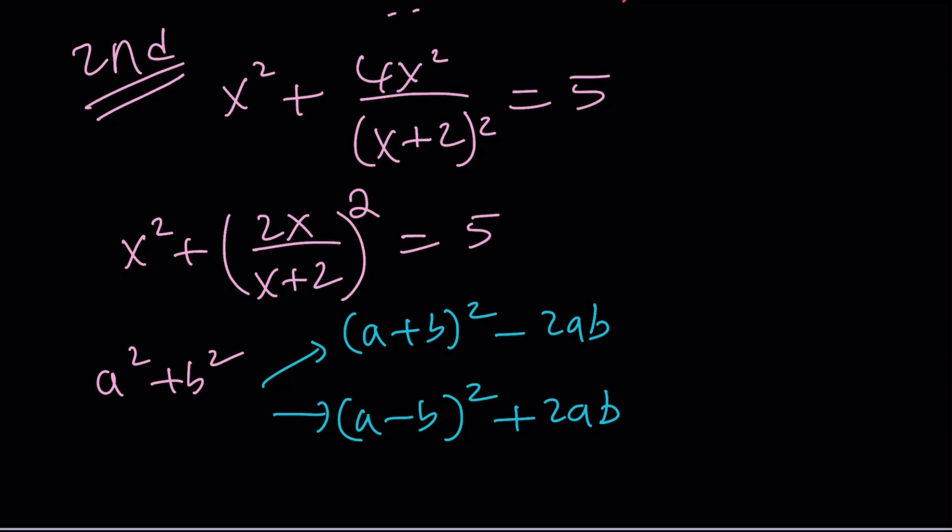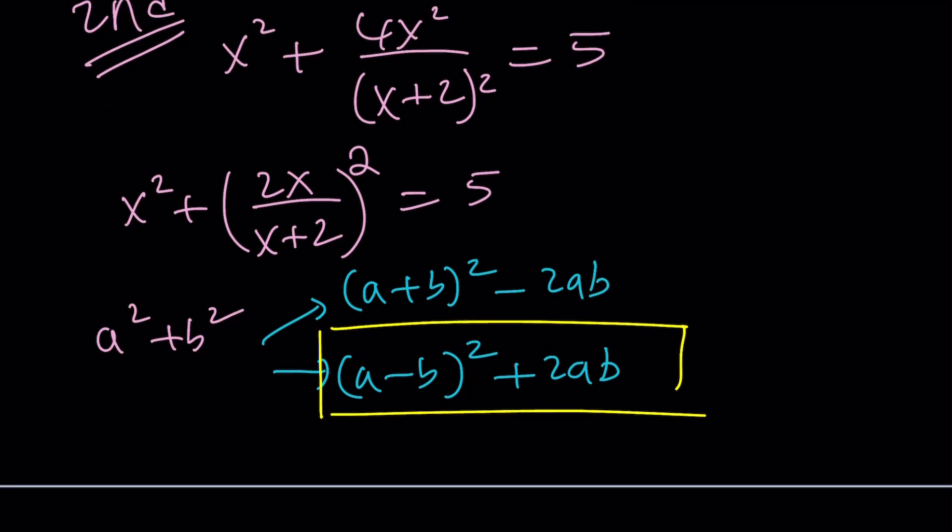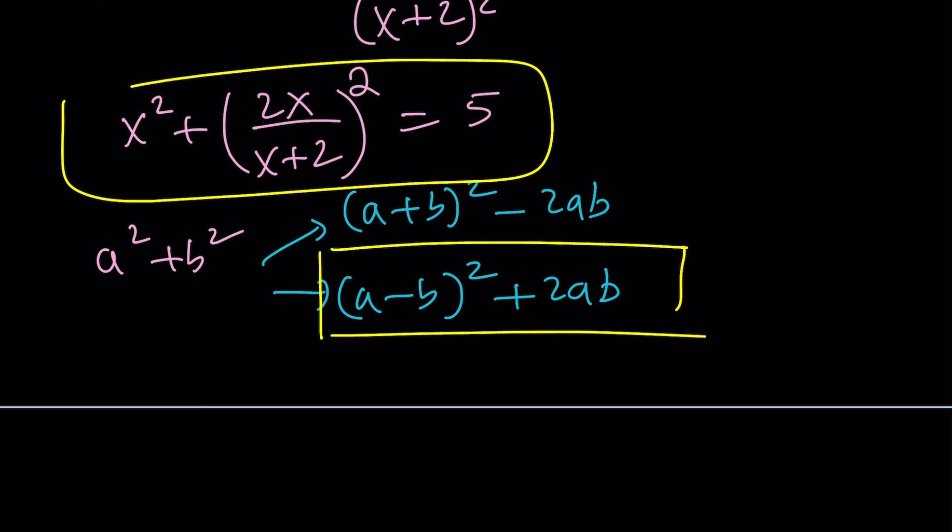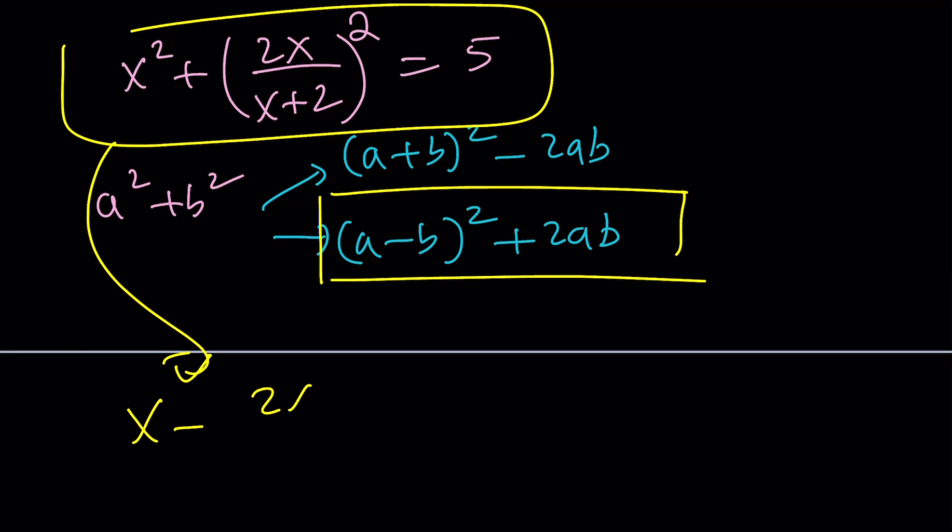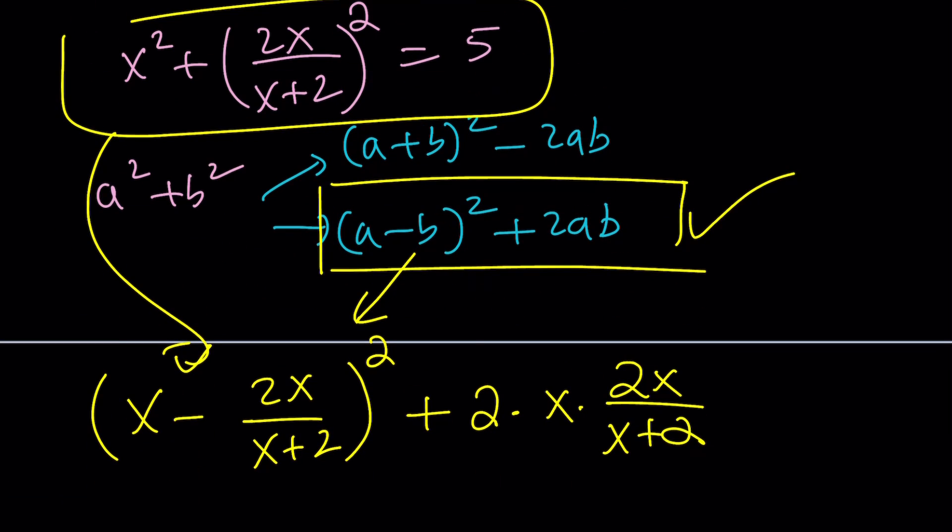Here's what I'm going to do. I'm going to go with the second one because having a minus sign is more beneficial. You'll see in a little bit why. If you go ahead and take this and simplify it and write it like this: (x - 2x/(x+2))² plus 2·x·(2x/(x+2)). So I wrote the sum of two squares as this one.